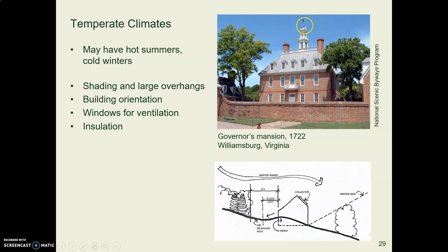Finally, there's a cupola — or belvedere — on top of the governor's mansion. You can go up there and enjoy the view, but it's primarily for cooling. You open those windows, air flows in through the bottom of the house and up and out through that tower.